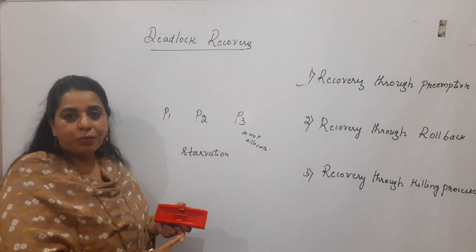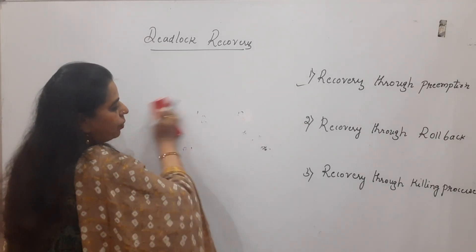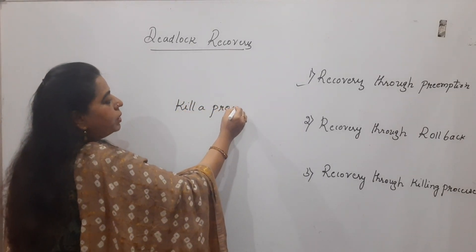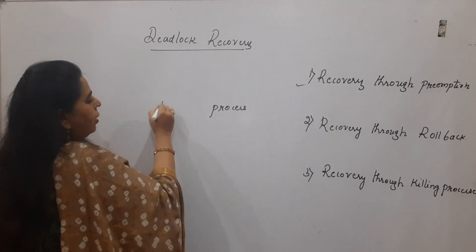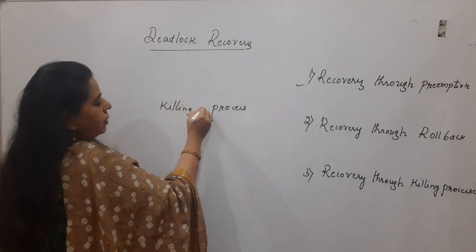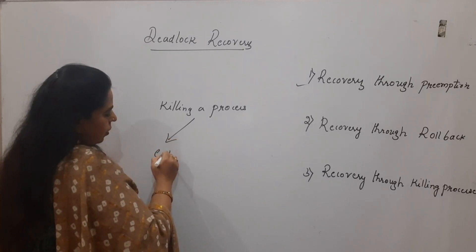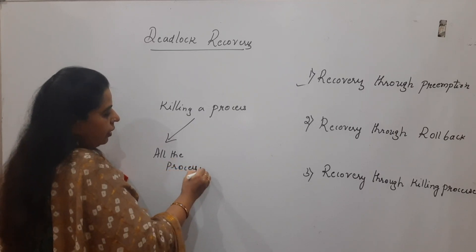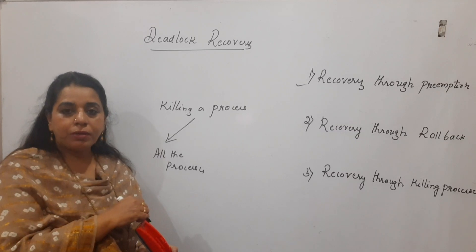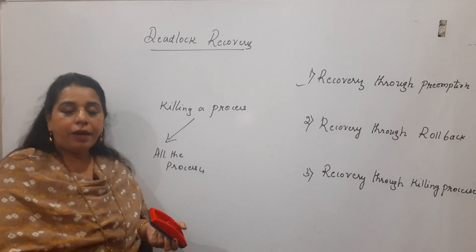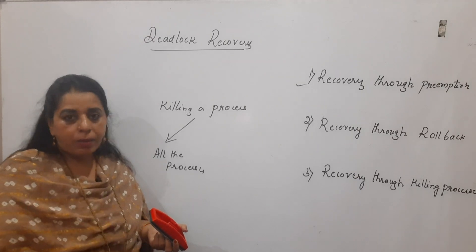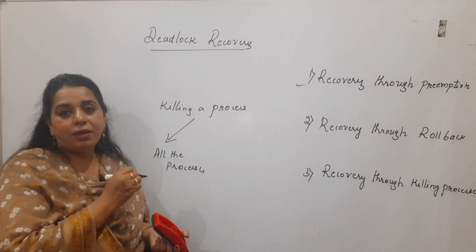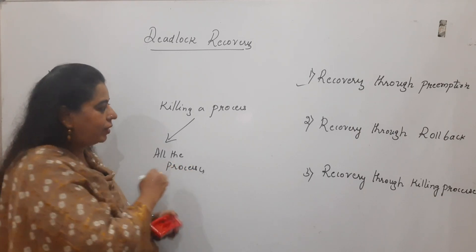The third method is recovery through killing a process. There are two ways. First, you can kill all the processes — all the processes in the system are killed because they resulted in deadlock and are not able to complete their job. It is better to kill all the processes and start reassigning the resources again so that there is no deadlock in the system.